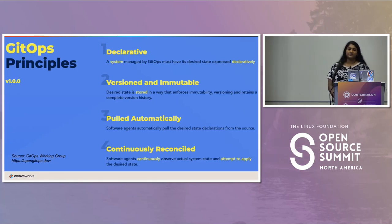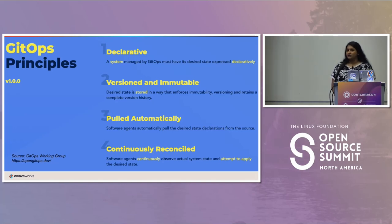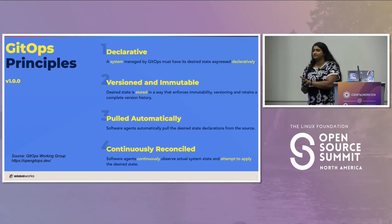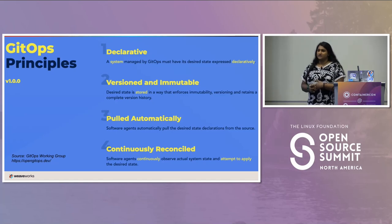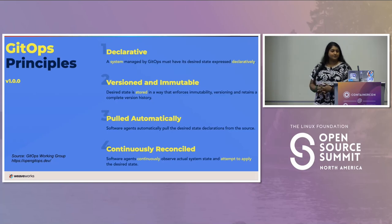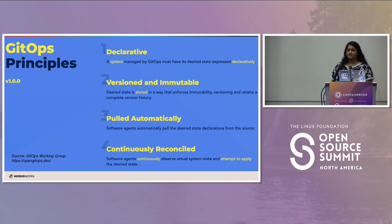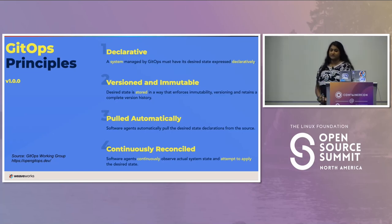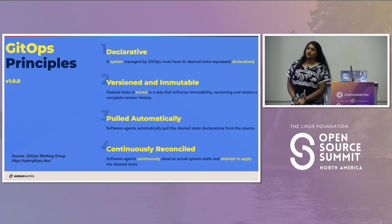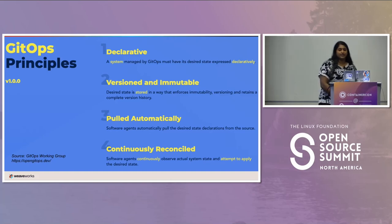The first principle is that a system managed by GitOps must have its desired state expressed declaratively — everything is written through code. That's kind of why GitOps and Flux work so naturally with Kubernetes, because Kubernetes is, in itself, very easy to use through a declarative nature. The second principle is that it's versioned and immutable: desired state is stored in a way that enforces immutability, versioning, and retains a complete version history. That covers your audit trail as well, so there's no sneaking in a change.